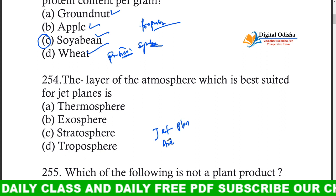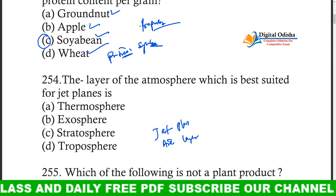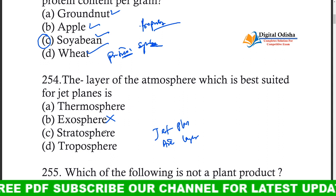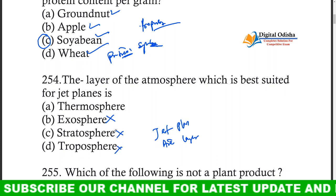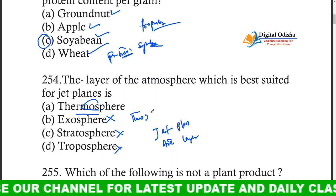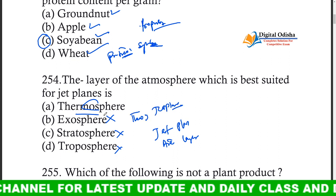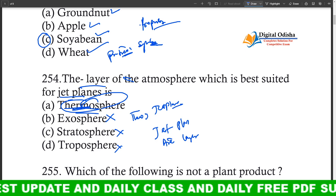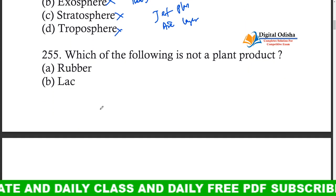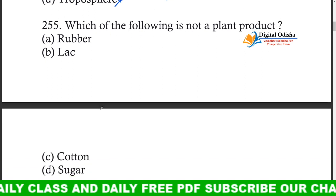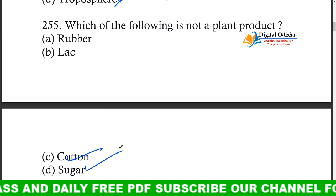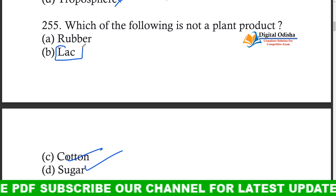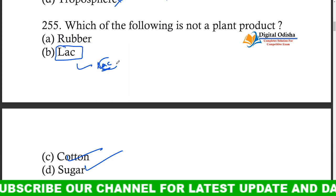Which layer is used for flying aeroplanes? Cotton, sugar plant, rubber plant, LAC plant — the correct answer is LAC plant product.